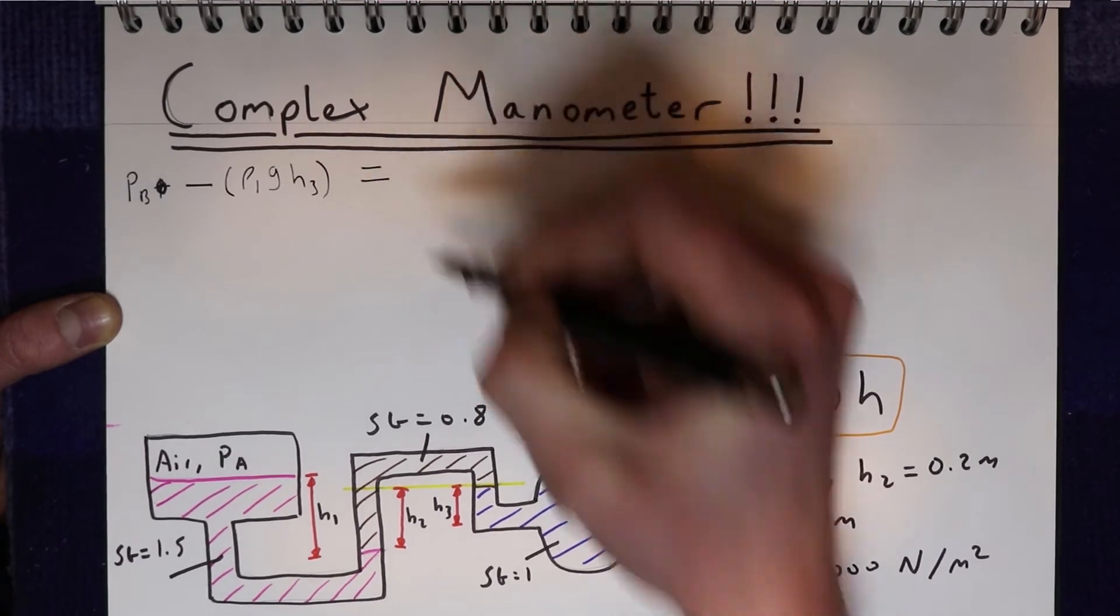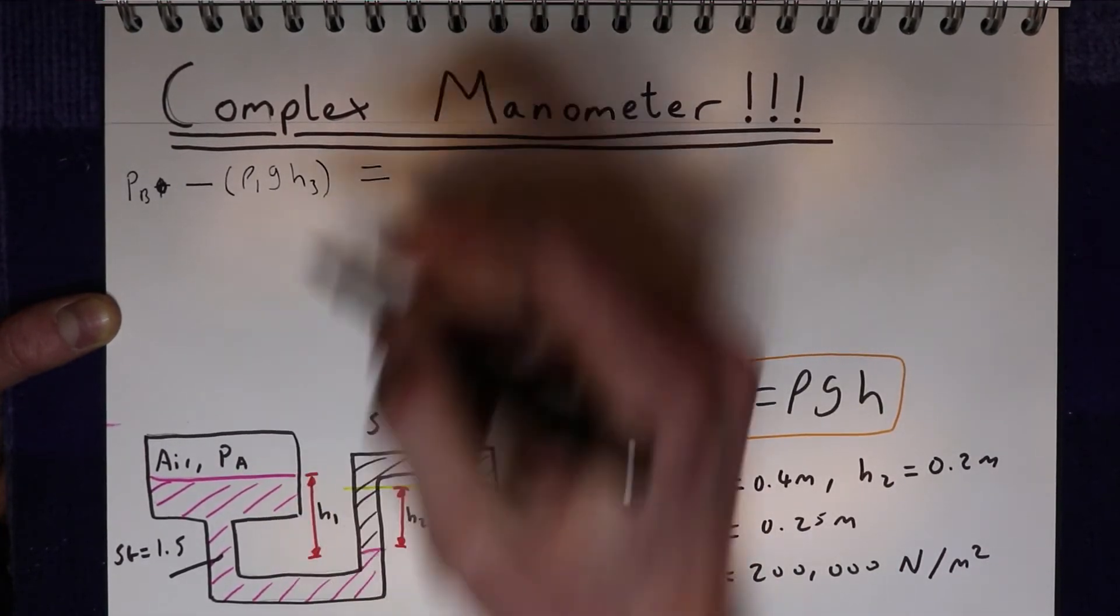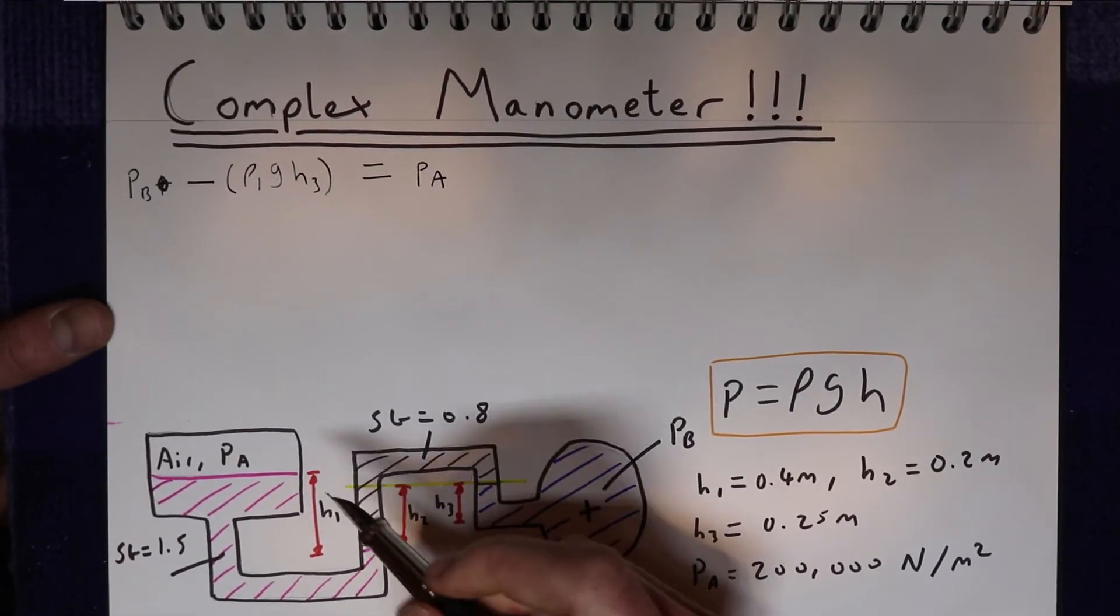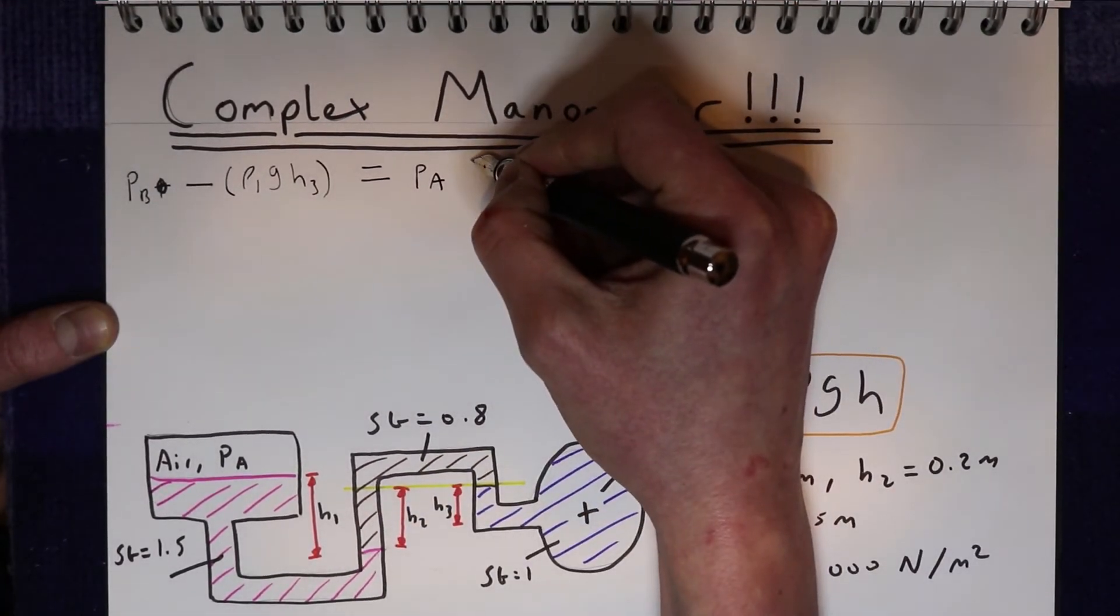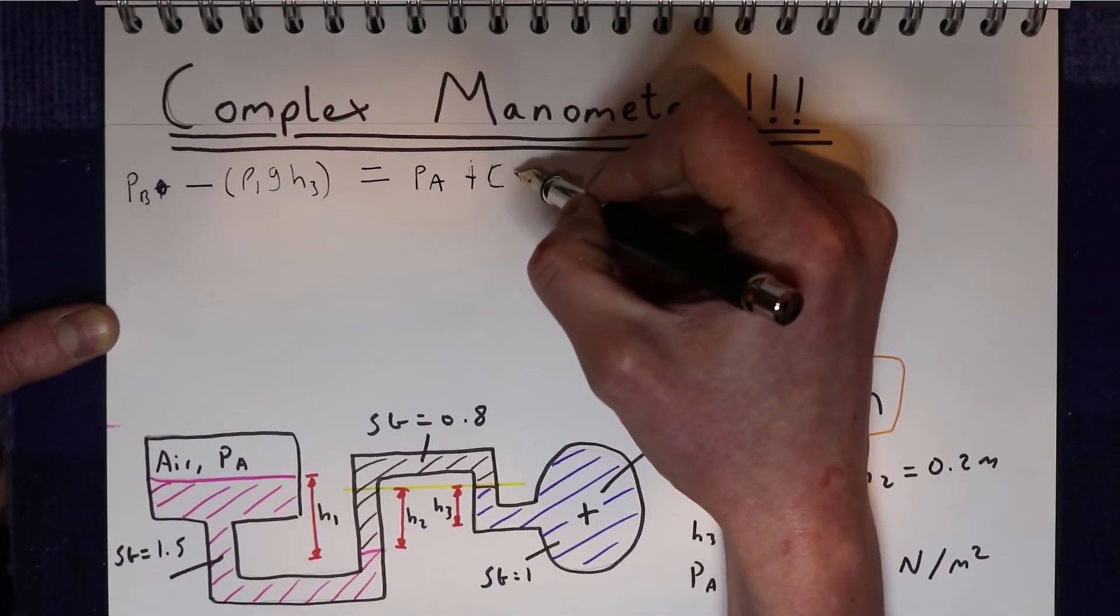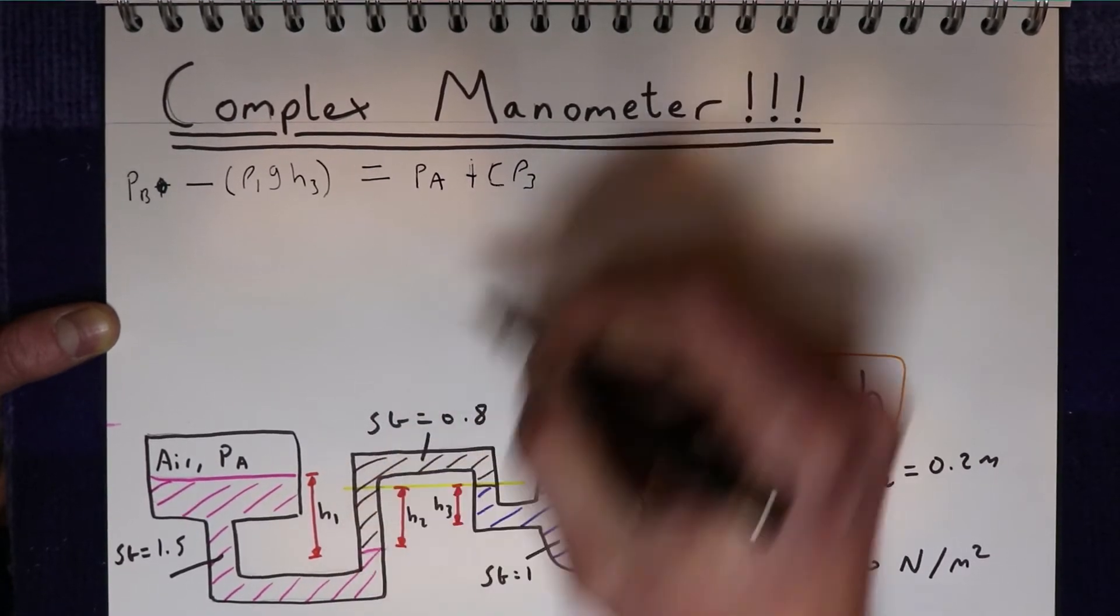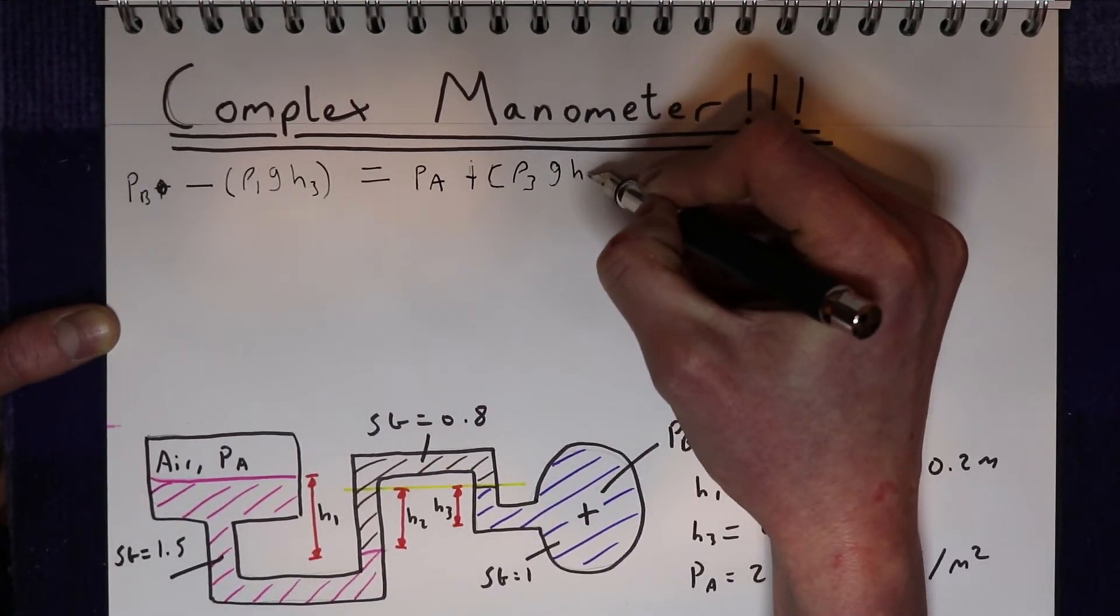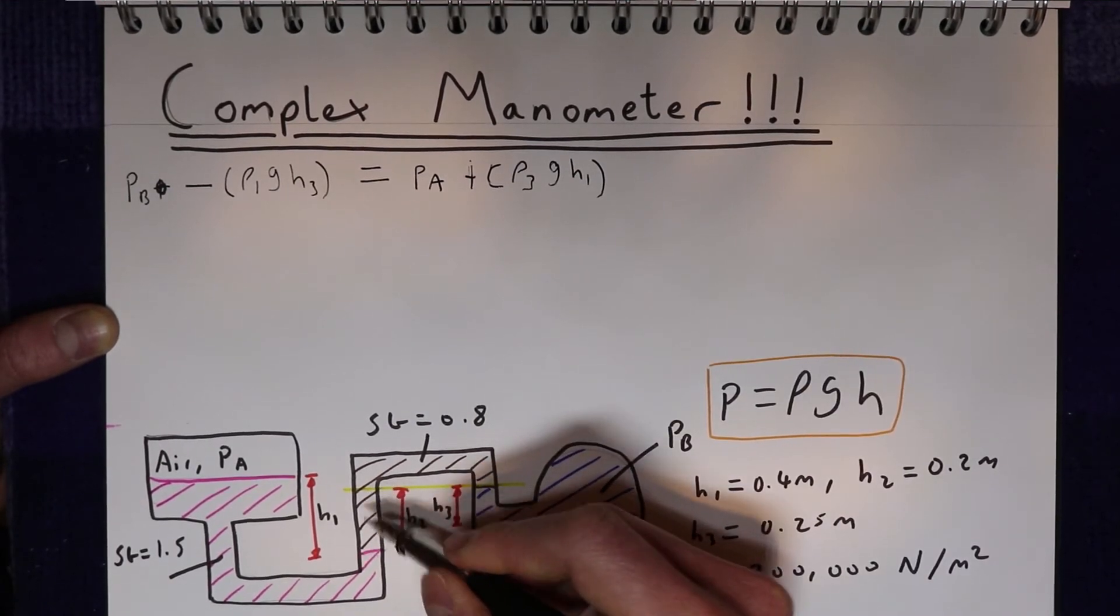And that's going to be equal to the total pressure pushing on this side of the line. So first of all we have PA. Then we have an increase in pressure as we go down, so that will be plus density of this fluid, that we'll call density 3, times gravity times by h1.